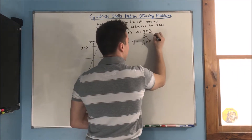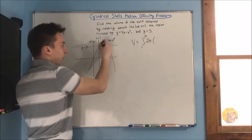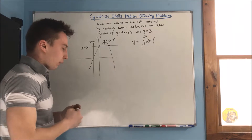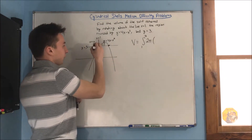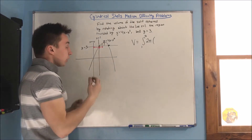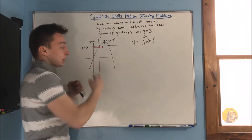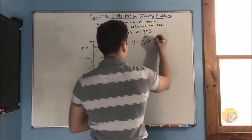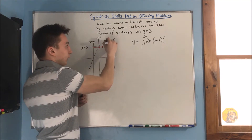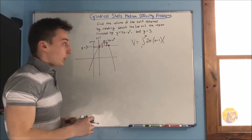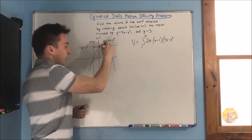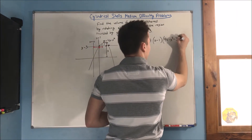Our volume is going to be the integral from 1 to 3 — we're rotating about a vertical line again, so our bounds are with respect to x, and we just found those: 1 and 3. We have our 2π, and we need to find our radius — that's just the distance from our vertical cuts to the axis of rotation. Our distance from the origin to our cuts is x, but we want the distance to x equals 1, so we do x minus 1. Our height is the distance from the curve up to y equals 3, which is 4x minus x squared, minus 3, giving us dx.